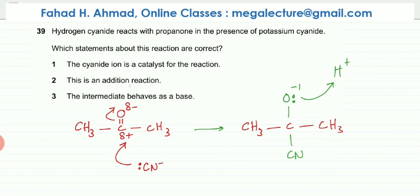Which statements about the reaction are correct? The first one is that the cyanide ion is a catalyst in the reaction. That is true because that's the role of potassium cyanide. You add cyanides so that the reaction happens at a faster rate because these HCN molecules don't ionize very easily. So you need to add extra cyanides. So that is a catalyst.